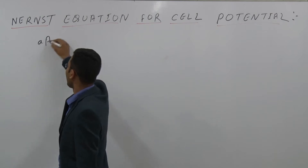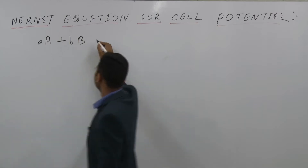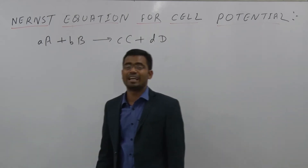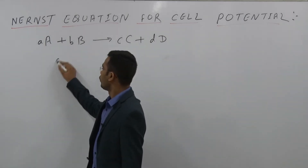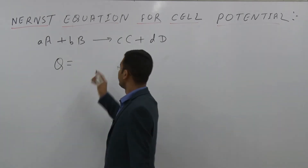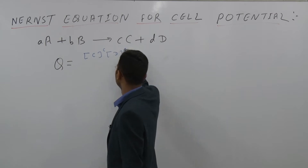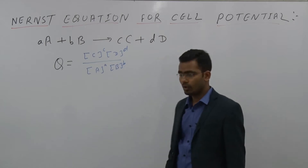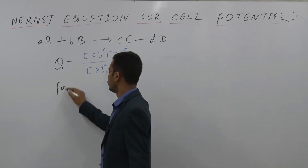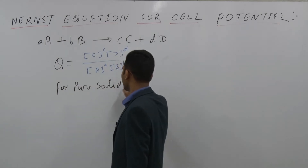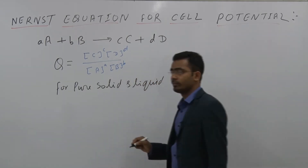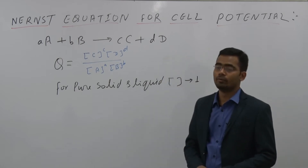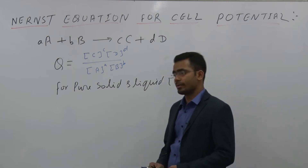If we have a reaction: aA + bB → cC + dD. From the concept of equilibrium, we know the reaction quotient Q. Q is the reaction quotient, which is the concentration of C raised to c, times D raised to d, divided by concentration of A raised to a, times B raised to b. For pure solids and liquids, concentration is taken as one.